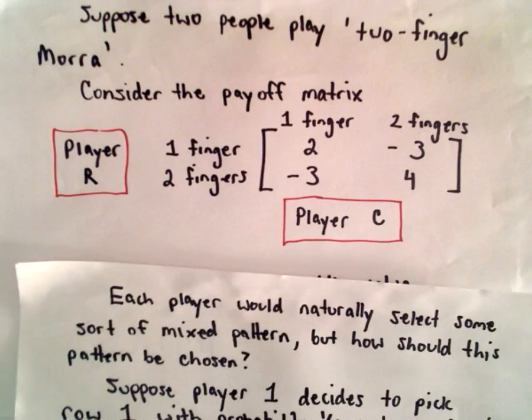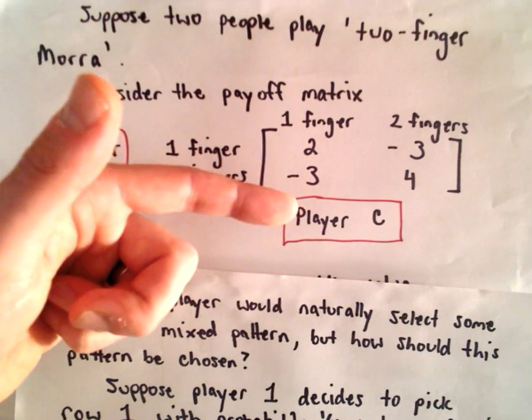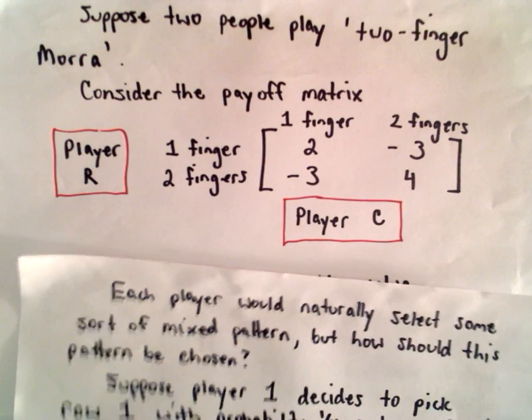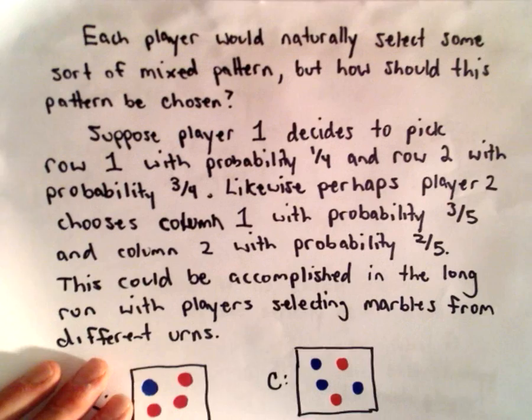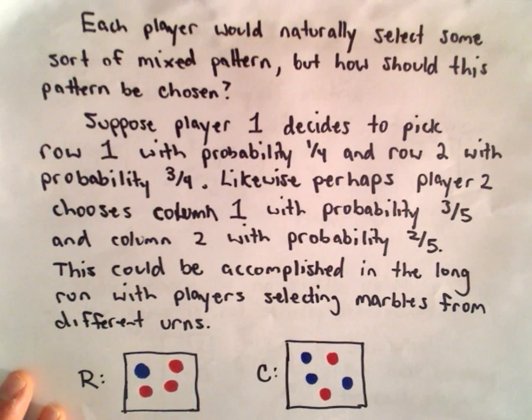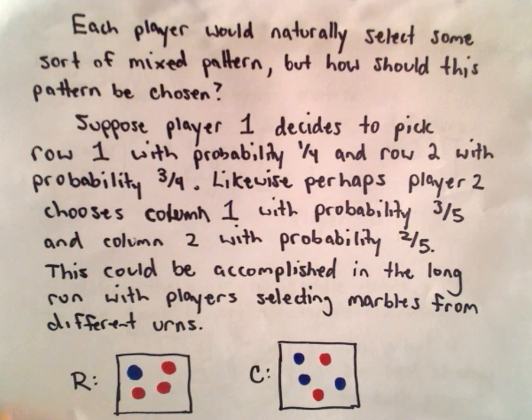You can imagine if you're playing this game, you would probably alternate between rows kind of at random and alternate between columns at random. Suppose you wanted to do something a little more long-term, have a more long-term probability associated with how you pick rows or columns. Suppose you want to alternate in some mixed pattern.